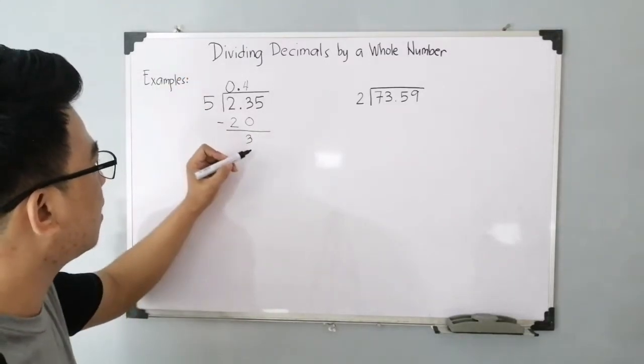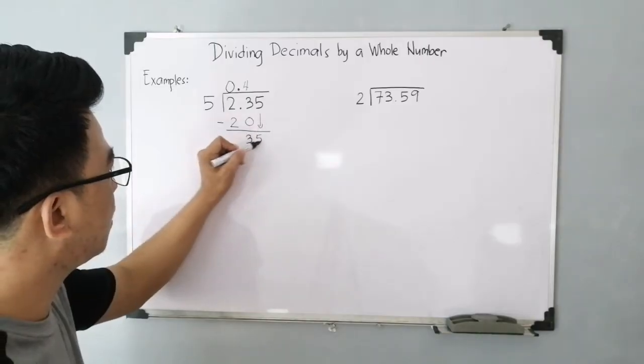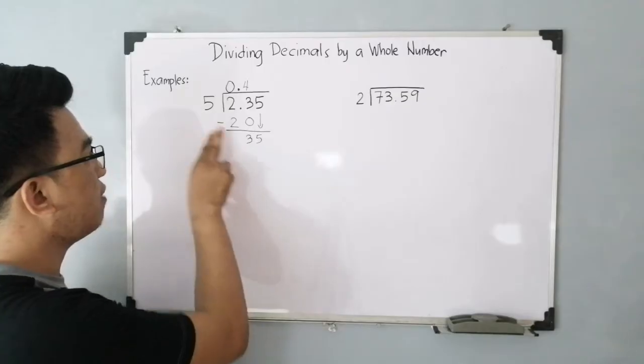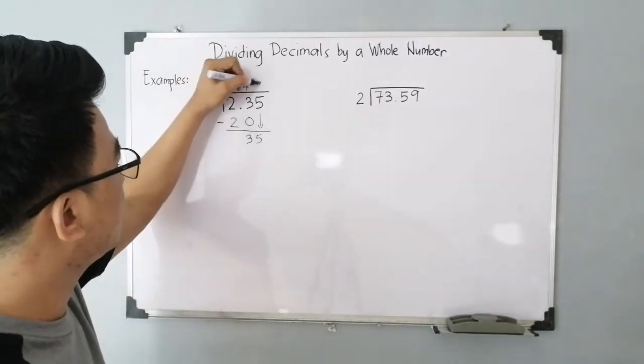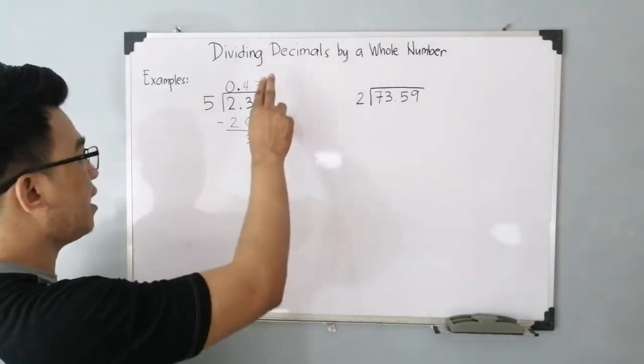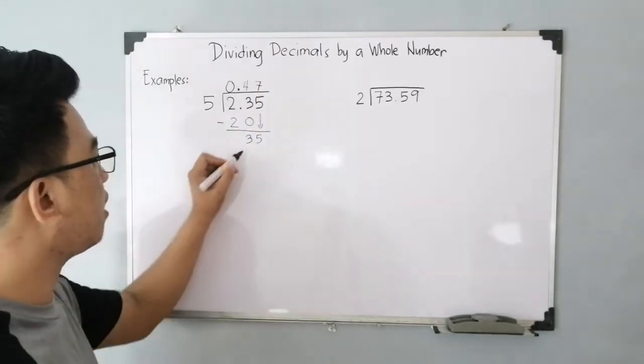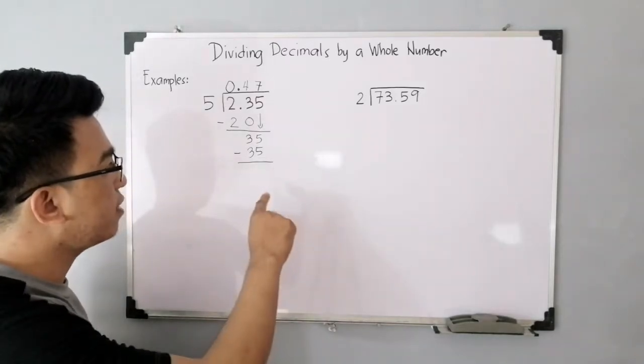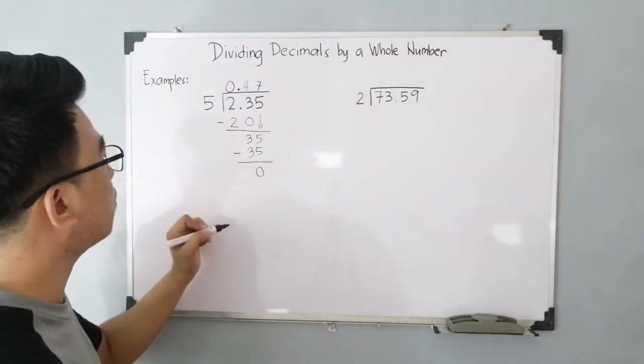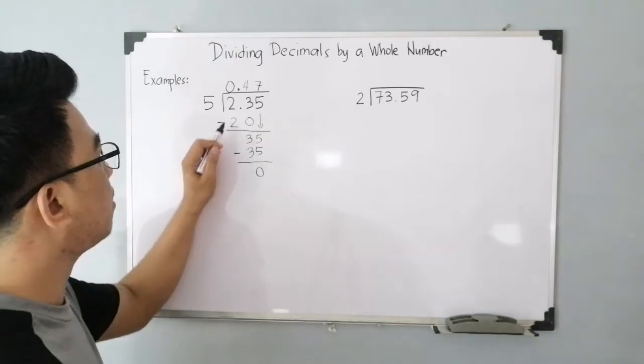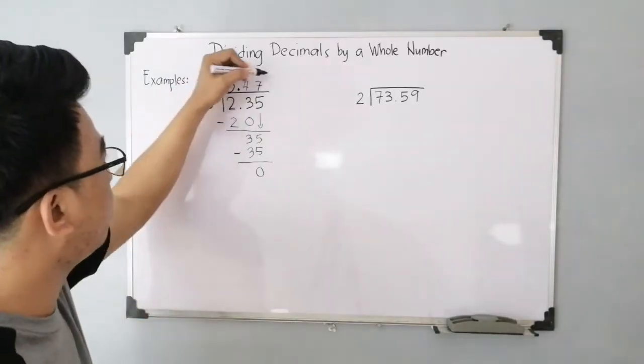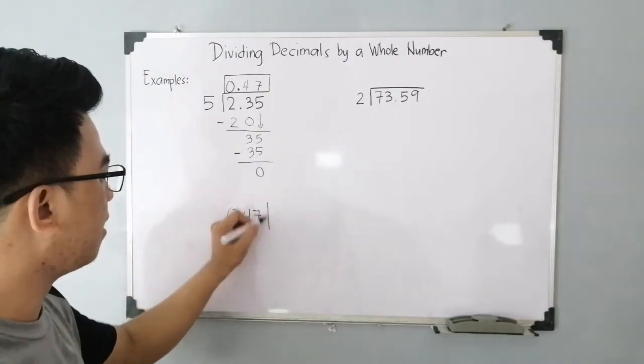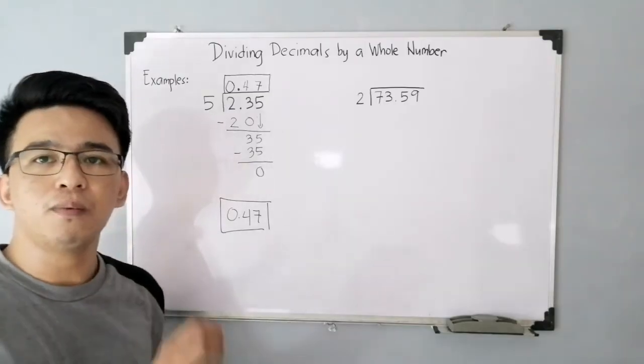Right after that, bring down 5. Next step is the same process. We need to divide your dividend: 35 divided by 5, that is 7. Now multiplying it again, you have 7 times 5, that will give you 35. And right after multiplication, you need to subtract the numbers: 35 minus 35, that is 0. Therefore, the quotient in dividing 2.35 by 5 is equivalent to 0.47. I hope in our first example you already know how to divide a decimal by a whole number.